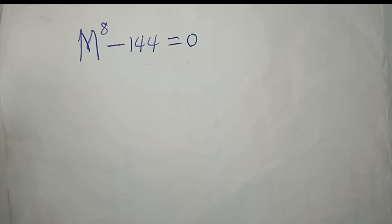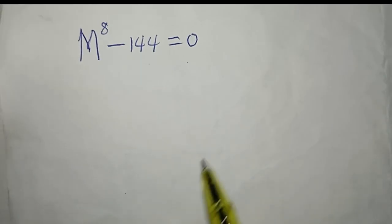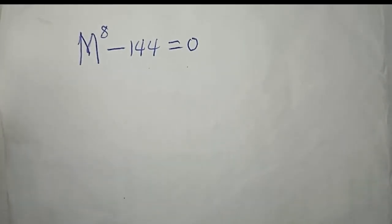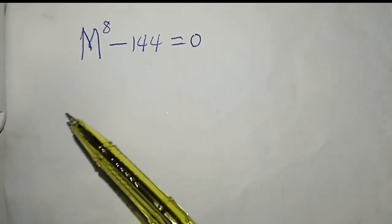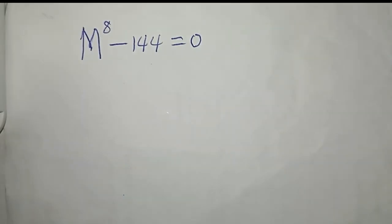Hello friends, welcome back. So we have this program right here: m power eight minus 144 equals zero. We are expected to find out the real values of m that actually satisfy this equation.